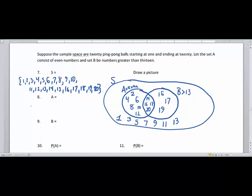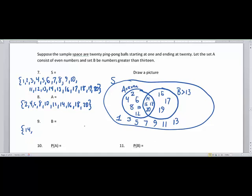Set A is all the even numbers. So this is just 2, 4, 6, and so on and so forth, until we get to 20. Now set B are all the numbers greater than 13. It does not include 13 because this says greater than 13 and not greater than or equal to 13. Although the set B could have been written as greater than or equal to 14, since we don't have any non-whole numbers.